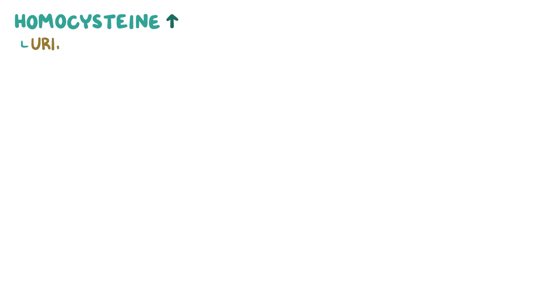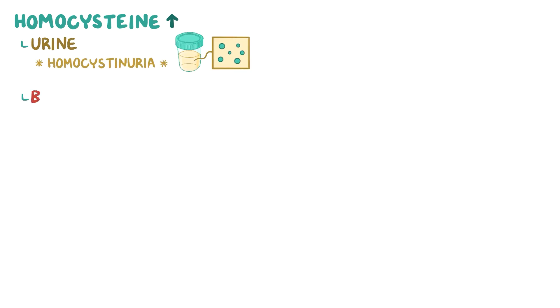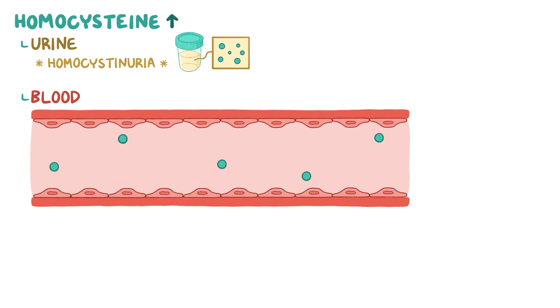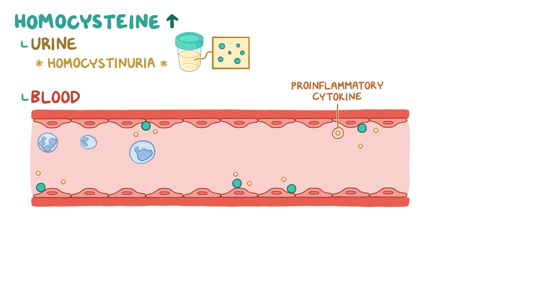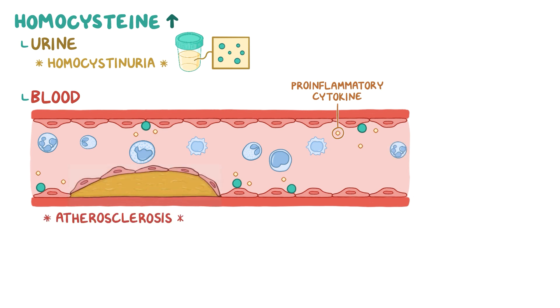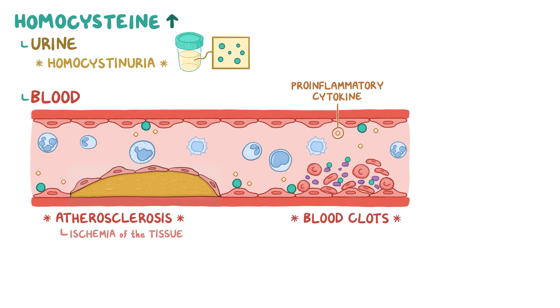When homocysteine builds up in the body, some of it is excreted in the urine, leading to homocysteinuria. It also builds up in the blood, where it binds to the endothelial cells lining blood vessels, causing them to secrete molecules called pro-inflammatory cytokines. These attract immune cells like leukocytes to the area and cause inflammation, which leads to atherosclerosis, or plaque buildup, inside the arteries. This narrows the arteries and could lead to ischemia of the tissue supplied by them. Homocysteine also binds to platelets and makes them stick together to make blood clots, all of which increases the risk of ischemic heart disease and stroke.